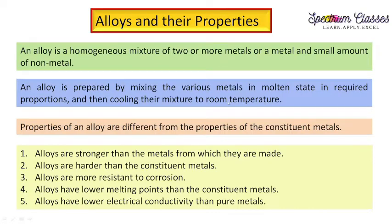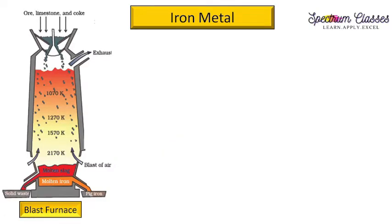Properties of an alloy are different from the properties of the constituent metals. Alloys are stronger and harder than the metals from which they are made. Alloys are more resistant to corrosion. Alloys have a lower melting point than the constituent metals, and alloys have lower electrical conductivity than the pure metal from which they are formed.